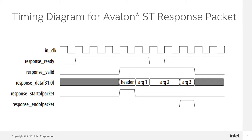This is the timing diagram to receive a response packet using Nearbox Avalon SD IP. First of all, we need to assert response ready when we want to read the response packet. Then we can start to capture the response data after the response start of packet is asserted, and capture the response data up to and including when the response end of packet is asserted.